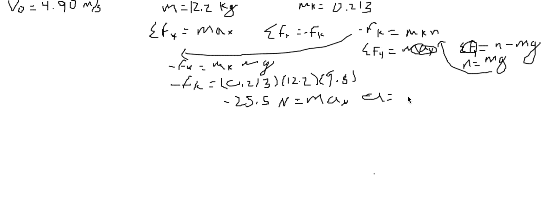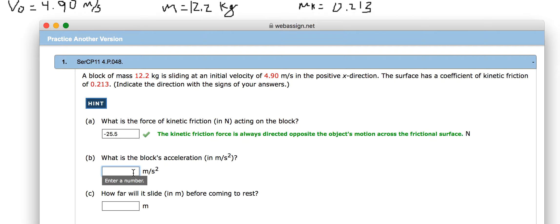This divided by 12.2 gives us an acceleration of negative 2.09 meters per second squared.